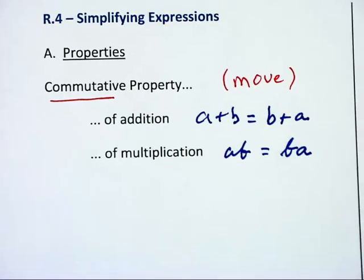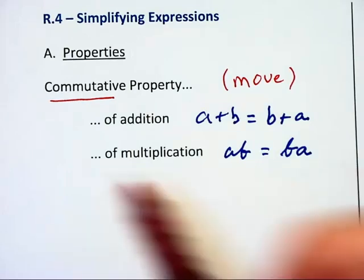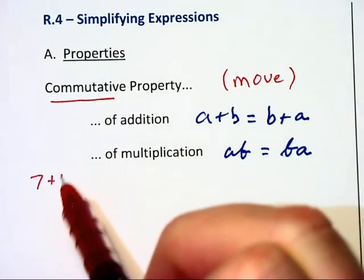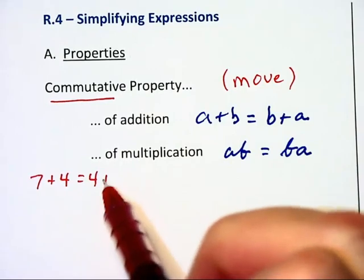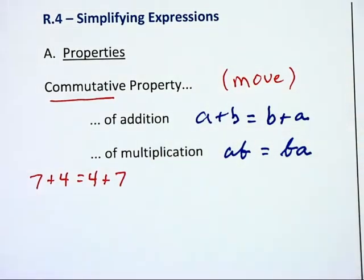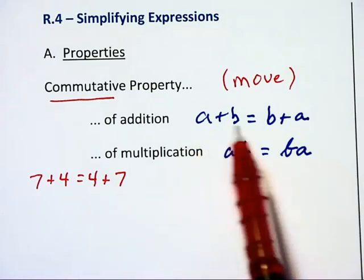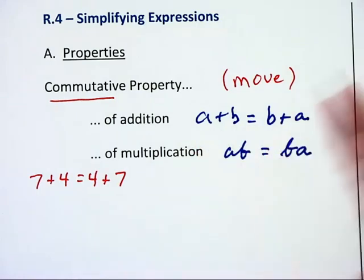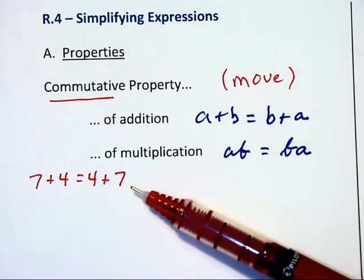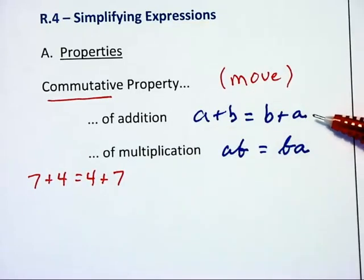I'd like to illustrate the difference between a property and an example of the property. If I list 7 + 4 = 4 + 7, that is an example of the commutative property instead of a + b = b + a. The property involves variables because when you use variables, you're saying it will apply no matter what numbers are substituted in.